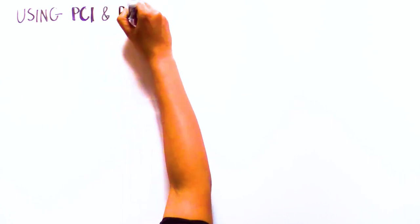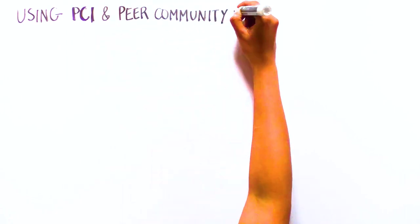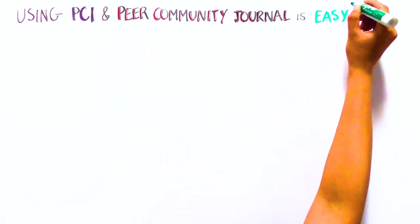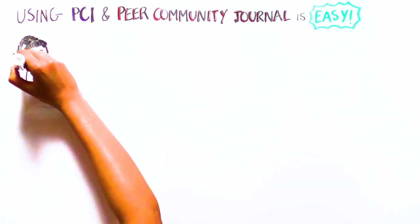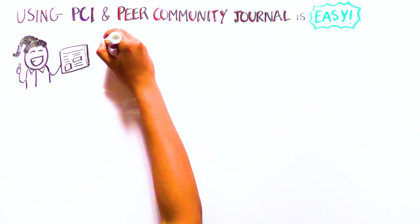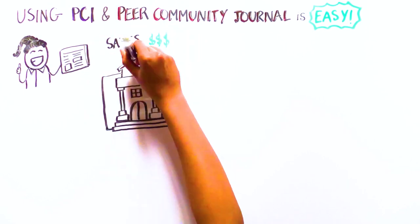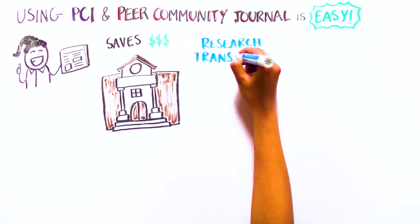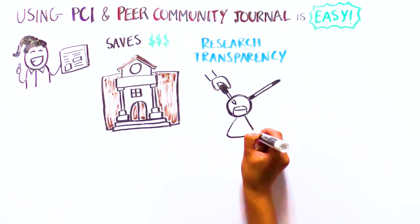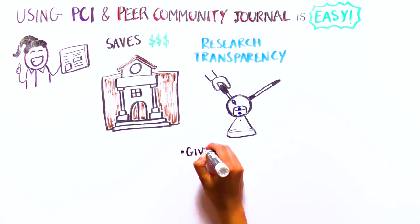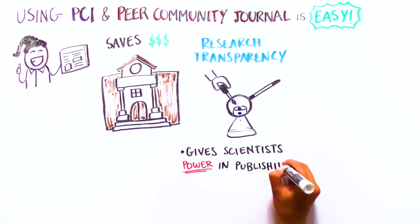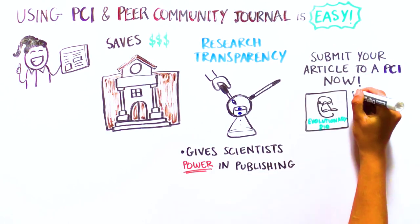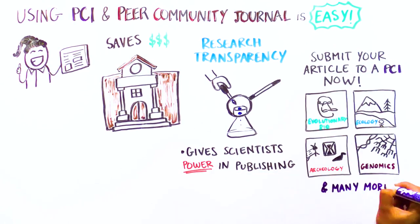Using PCI and Peer Community Journal sounds easy, right? That's because it is! It also saves institutions money and increases research transparency. Give scientists the power over the publishing system, and submit your article to a PCI now.